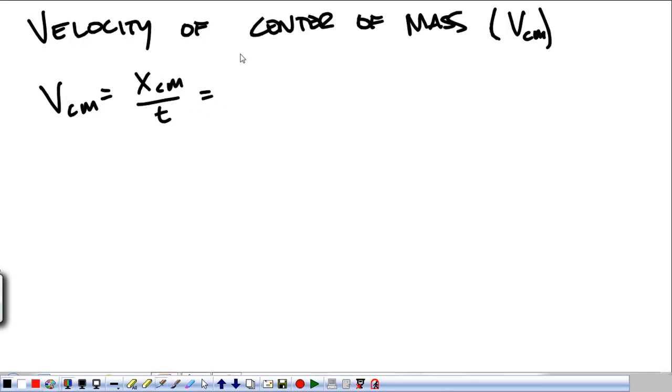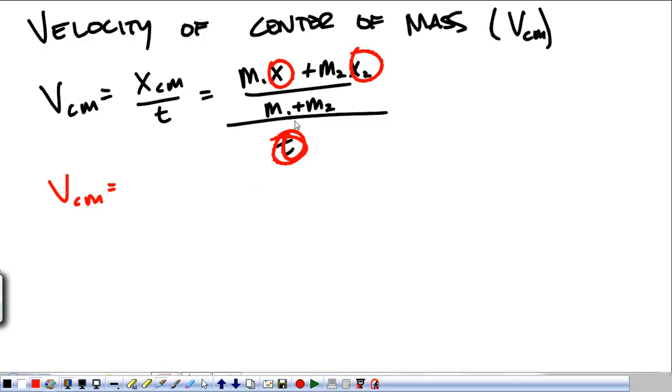So that's m1x1 plus m2x2 divided by m1 plus m2, and that whole thing is divided by time. Now mathematically what happens is that we have x over time and x over time. So the velocity of the center of mass is m1v1 plus m2v2 over m1 plus m2.